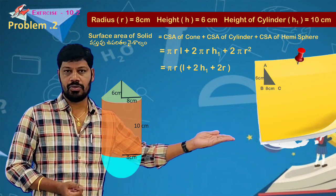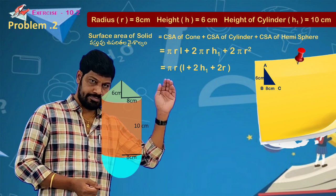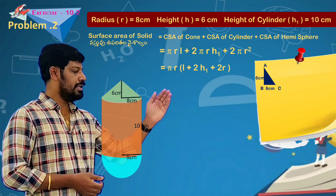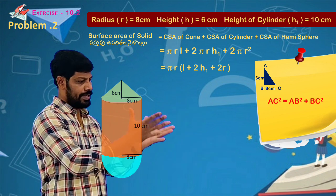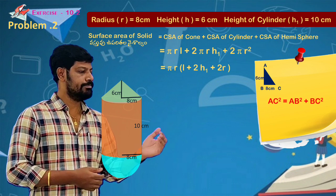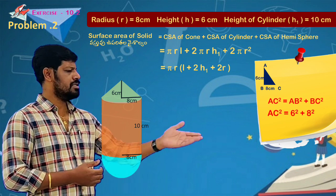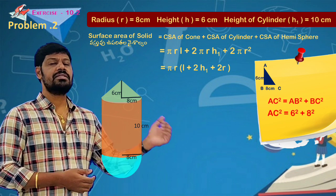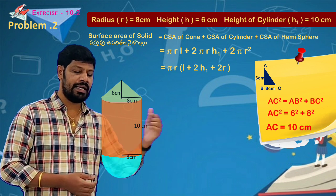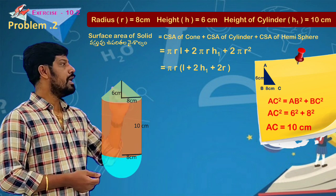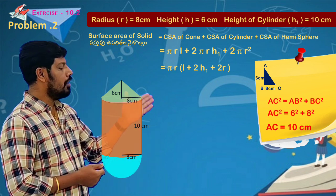Given height is 6 and radius is 8. Applying Pythagoras theorem: AC² = AB² + BC². AC² = 6² + 8² = 100, so AC = 10. So l value is 10, h₁ is 10. Now we substitute values.